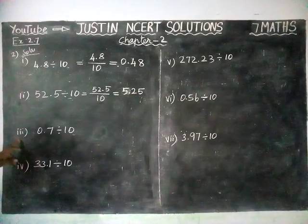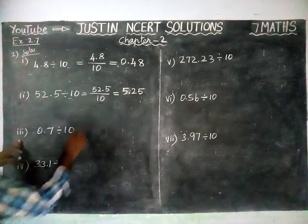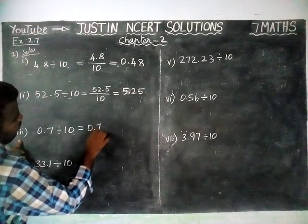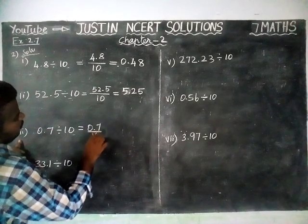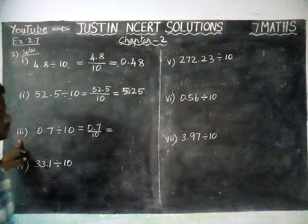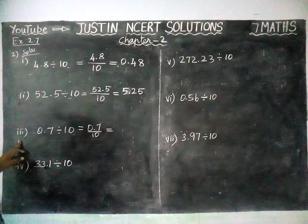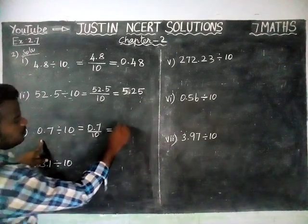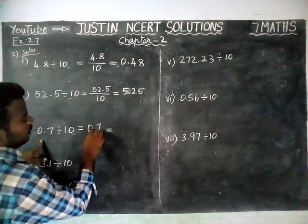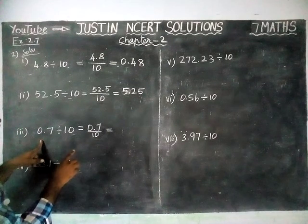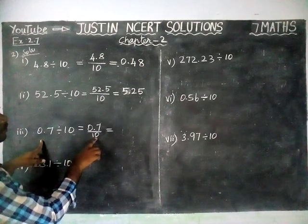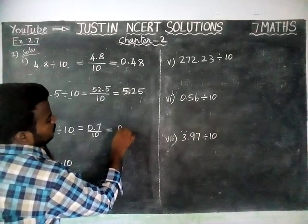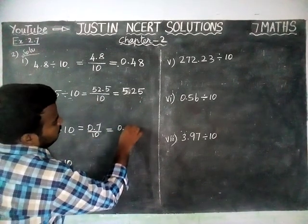The third question: 0.7 divided by 10. Here we already have one decimal point, so we have to move left hand side another one step. The answer is 0.07.